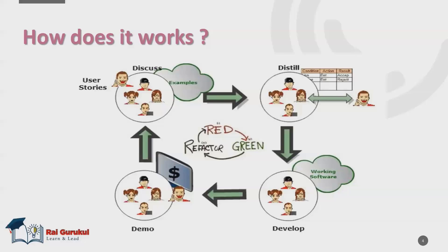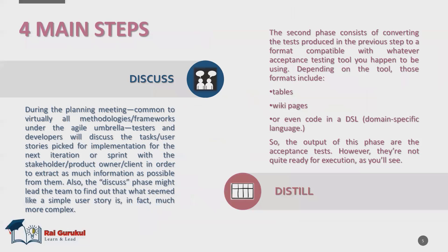There are four main steps covering this process. First, during the planning meeting — common to virtually all methodologies or frameworks — testers and developers discuss tasks or user stories slated for implementation in the next sprint with stakeholders, product owners, and clients, in order to extract as much information as possible. These discussions may reveal that what seems like a simple user story is in fact much more complex.